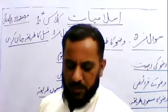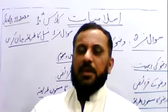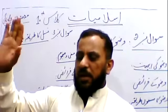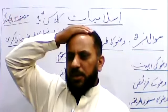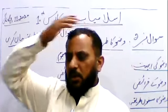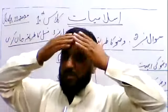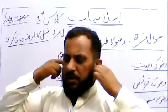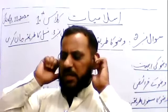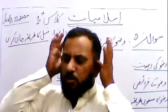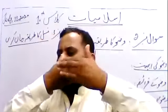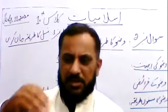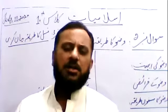سر کا مسا کریں — پورے سر کا مسا کرنا سنت ہے۔ دونوں ہاتھوں کو گیلا کر کے آگے سے پیچھے لے جائیں اور پھر واپس لائیں۔ کانوں کے اندر شہادت کی انگلی گھمائیں اور انگوٹھا کان کے پیچھے پھیریں۔ ہاتھ کی پشت سے گردن پر مسا کریں — یہ سر کا مسنون مسا کرنے کا طریقہ ہے۔